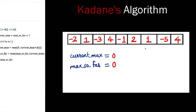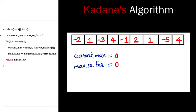So we will look at the algorithm. We have two parameters for the function: one is the array or the pointer of the first element, and the next is the length of the array. We have two variables — current max and max so far — which we set to 0 at the beginning. We iterate through the array, add each element to current max. If current max becomes negative, we set it to 0. We set max so far to current max if current max is greater than max so far.